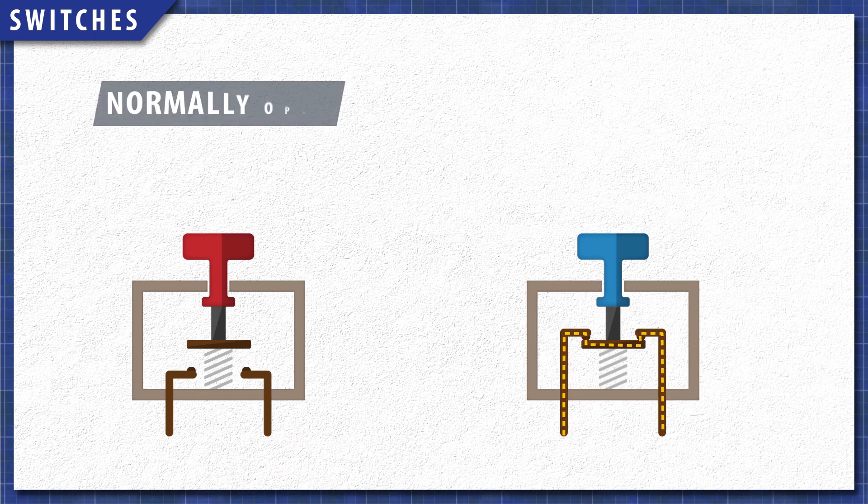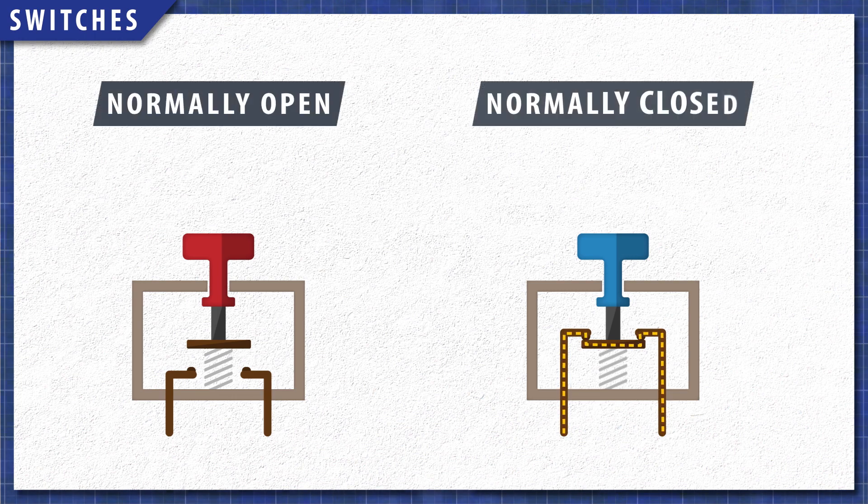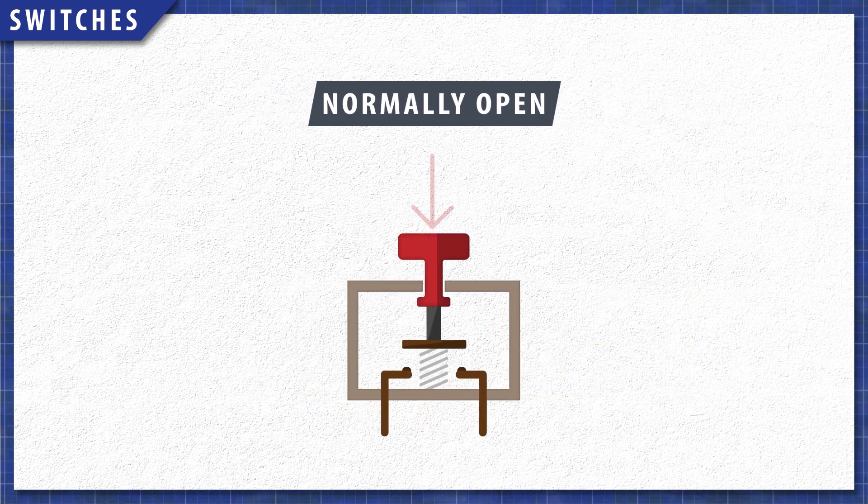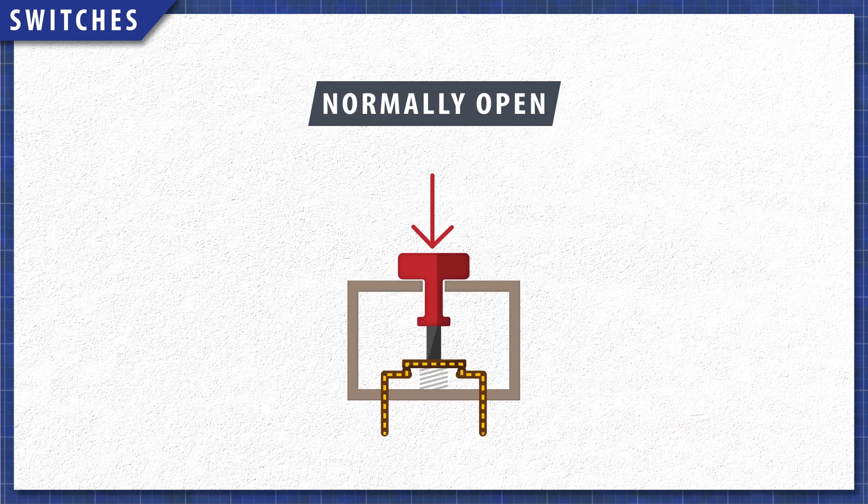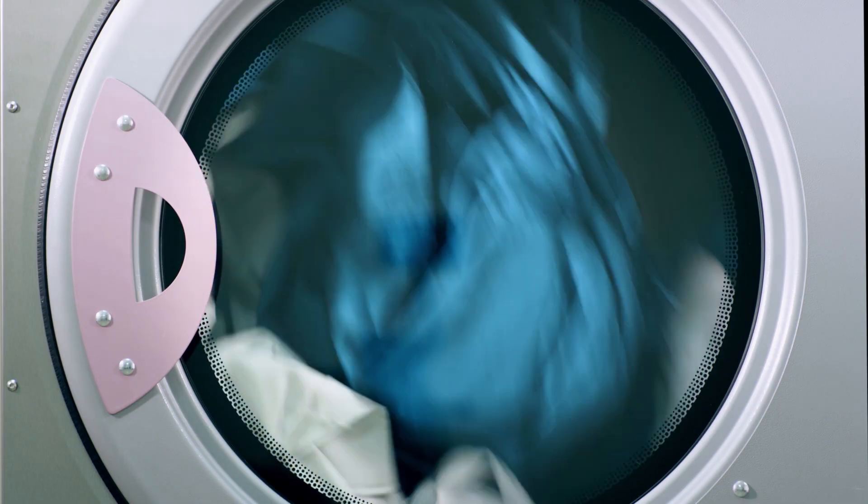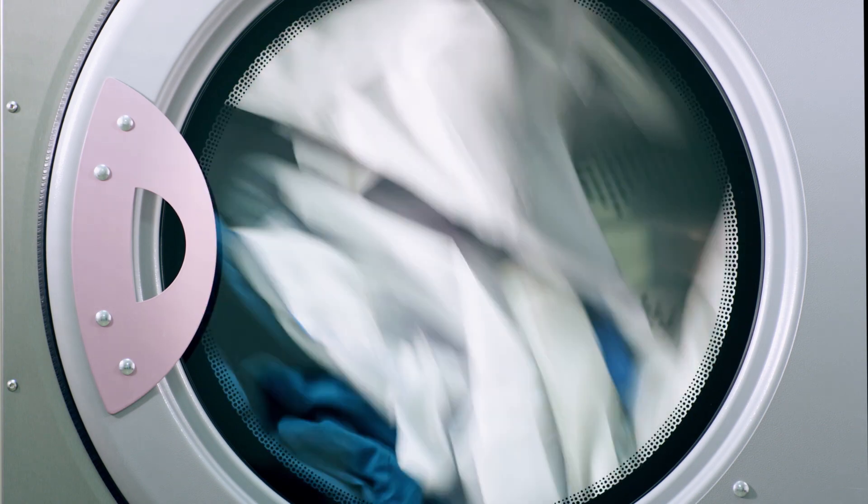Switches are either normally open or normally closed. Normally open switches do not have continuity until the switch is pressed closed. One example is a dryer door switch that shuts off the dryer when the door is opened.